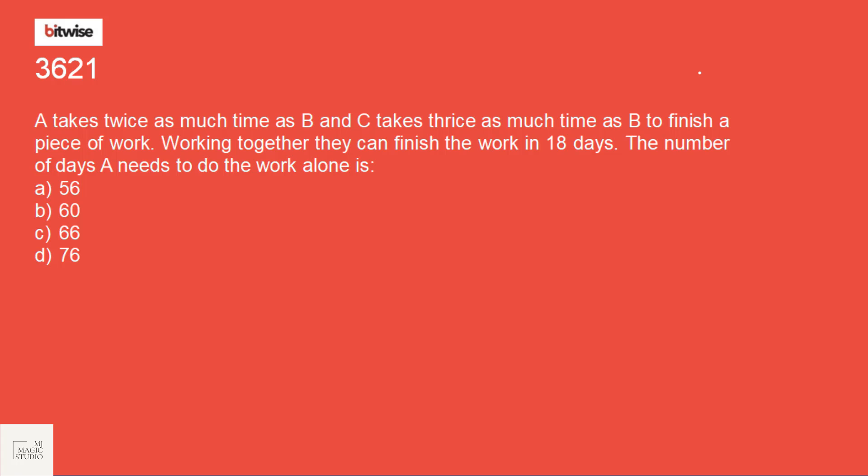Okay, this time from numerical ability and a question from time and work. We know that where to find all the rules related to time and work solving. That is rule 8, the CM rule. That we would be using. A takes twice as much time as B. So if B takes X days, A will take 2X days to complete the work. And C takes thrice as much time as B. That means C takes 3X days to finish a piece of work.